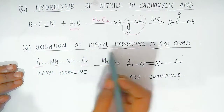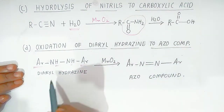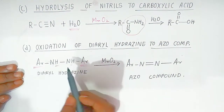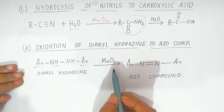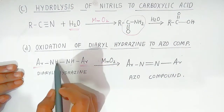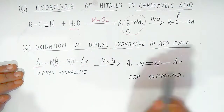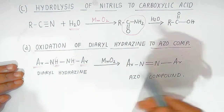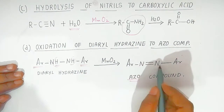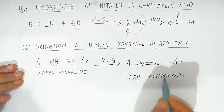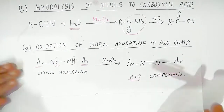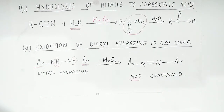Oxidation of diarylhydrazine to azo compound. Here two aryl groups are present at the hydrazine. In presence of manganese dioxide, it is converted into an azo compound — there is a removal of hydrogen, which is also called oxidation. So diarylhydrazine is oxidized to azo compound. Nitrogen-nitrogen bonded compounds are called azo compounds. These are very important reactions. If you like my video, please share and subscribe. Thank you very much.